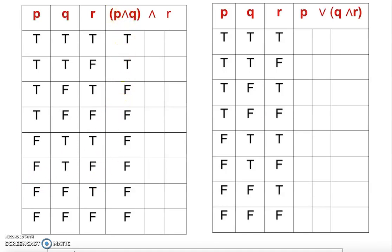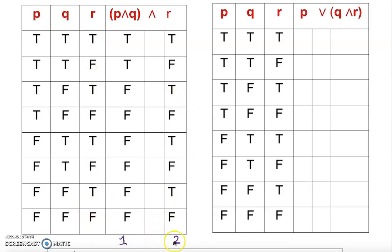I'm going to organize this with step numbers. That would be my step one — comparing P and Q. Step two: I'm going to find R. If it were negation R we would negate all values, but we don't have a negation here, so I'm just going to rewrite whatever R is. So the R column is: true, false, true, false, true, false, true, false — exactly as given. Now we compare step one and step two to get the answer column, which will be step three.